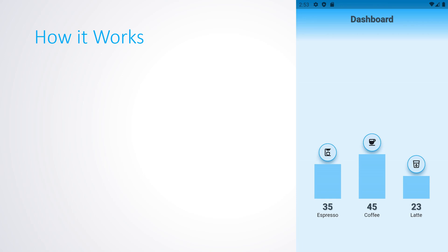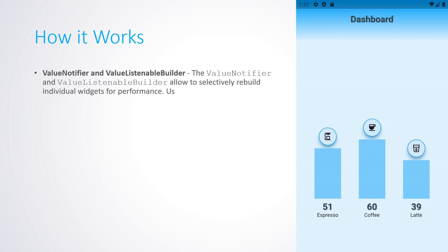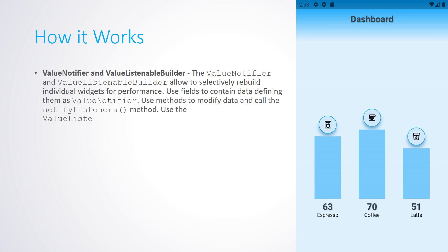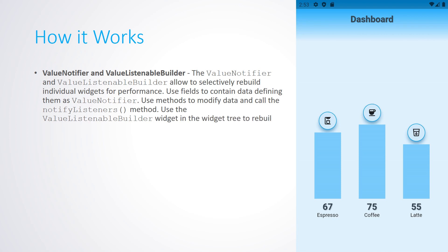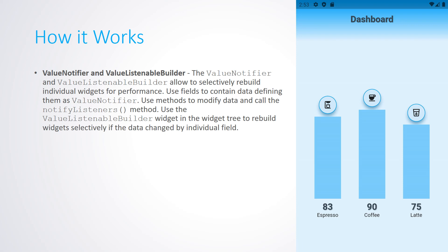To summarize: the ValueNotifier and ValueListenableBuilder allow selectively rebuilding individual widgets for performance. Use fields defined as ValueNotifier to contain data. Use methods to modify data and call notifyListeners. Use the ValueListenableBuilder widget in the widget tree to rebuild widgets selectively when data changes, by individual field.